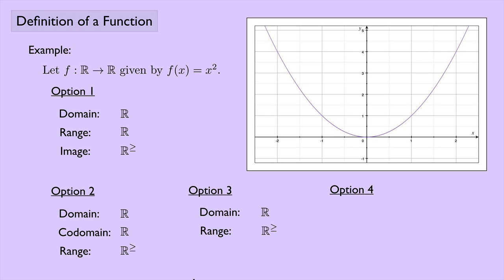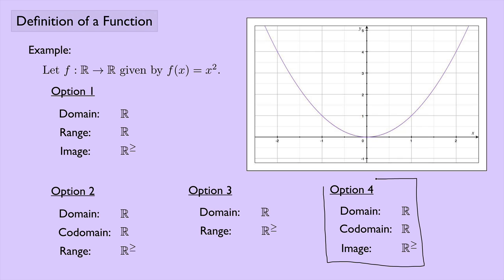Let's look at one more: option four. The domain is all real numbers, the codomain is all real numbers (set B), and the image is all real numbers greater than or equal to zero. This is the convention I'm going to use — by no means the standard, but it makes the most sense to me. My advice would be to check your textbook or your professor's convention, since different textbooks and people use different conventions.